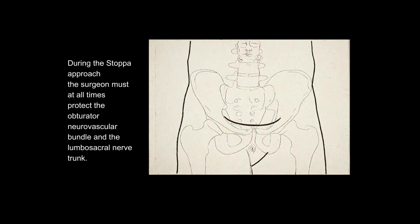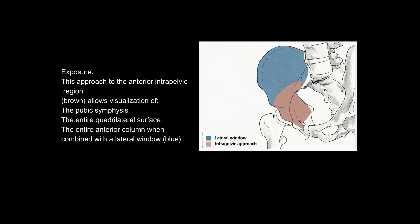During the stopper approach, the surgeon must at all times protect the obturator neurovascular bundle and the lumbosacral nerve trunk. This approach to the anterior intrapelvic region allows visualization of the pubic symphysis, the entire quadrilateral surface, and the entire anterior column when combined with a lateral window.